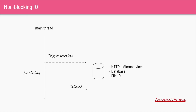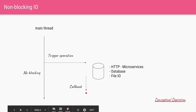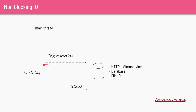What you ideally want is non-blocking IO. Your main thread triggers the operation and passes a callback method saying: perform the operation, and whenever you're ready with the result you call this callback method in a separate thread. Once you have triggered that operation, your main thread will not block and it can keep on performing subsequent operations. This is the ideal scenario.